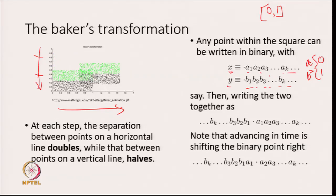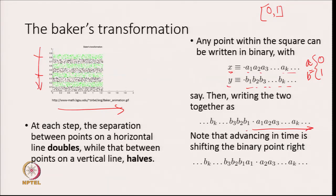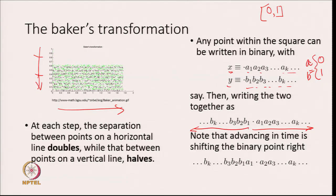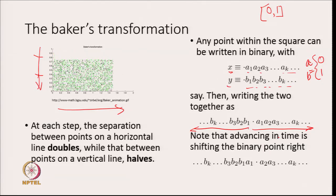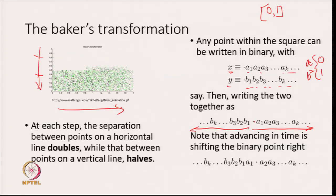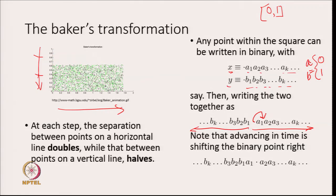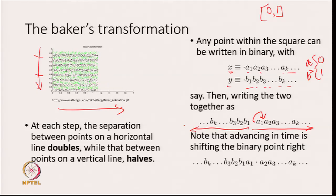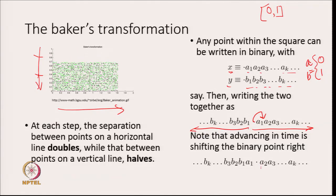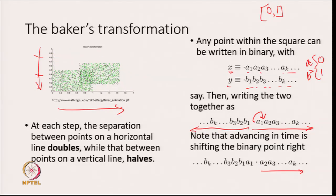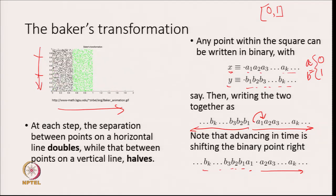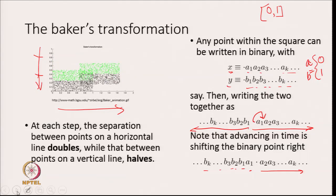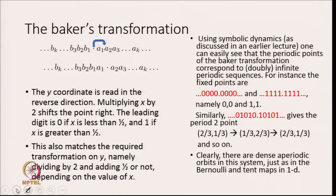If I write both coordinates together — x in the forward direction and y in reverse direction — note that advancing in time is the same as shifting the point one space to the right. Starting with a1 a2 a3 ... and b1 b2 b3 ..., after one iteration the x coordinate becomes a2 a3 ... up to ak, whereas the y coordinate becomes a1 b1 b2 b3 ... going down. This is a very nice feature of this particular map.